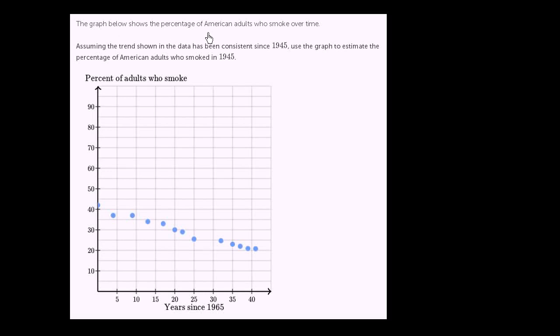The graph below shows the percentage of American adults who smoke over time. Assuming the trend shown in the data has been consistent since 1945, use the graph to estimate the percentage of American adults who smoked in 1945. So let's see what's going on here.